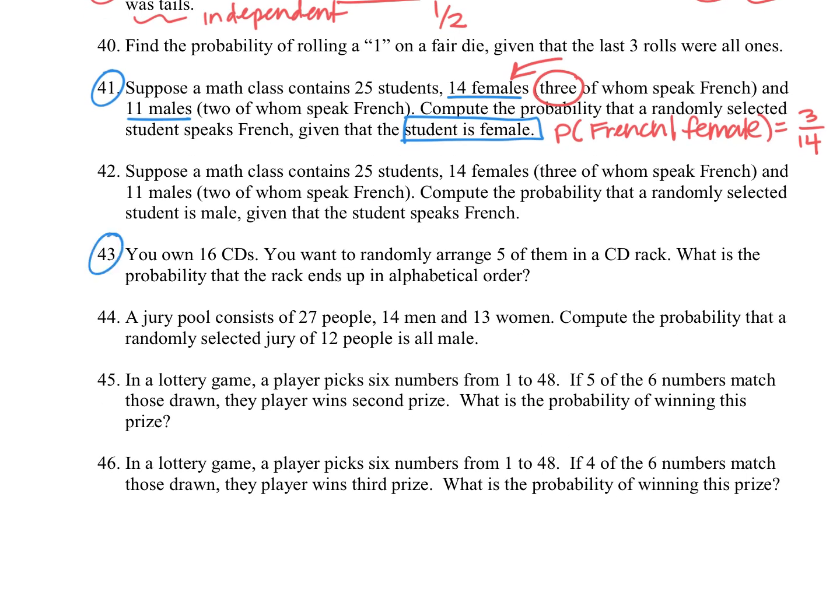Looking at 43, we own 16 CDs, and we want to randomly arrange five of them in a CD rack. So we have basically five things that we're rearranging. There's a little bit of extra information there because it just wants us to be taking five from there and then seeing the different ways that we could arrange those five.